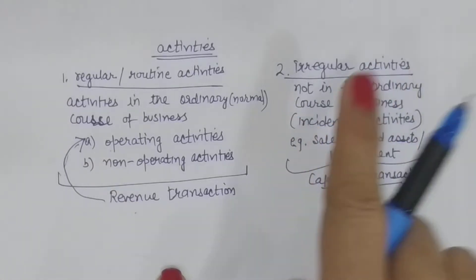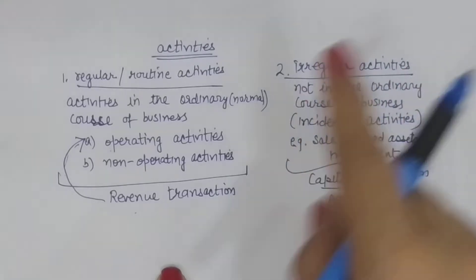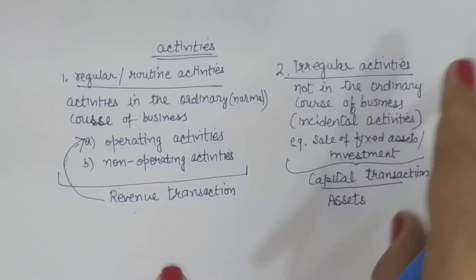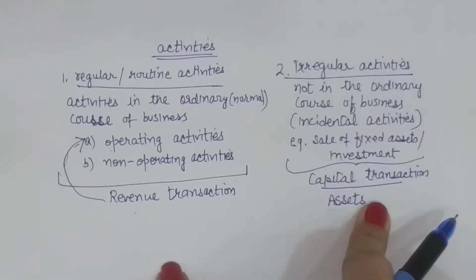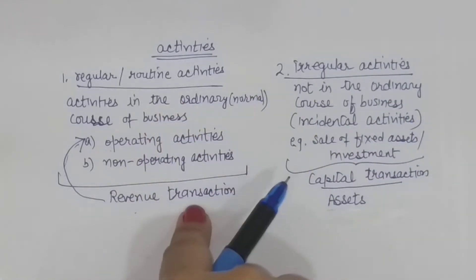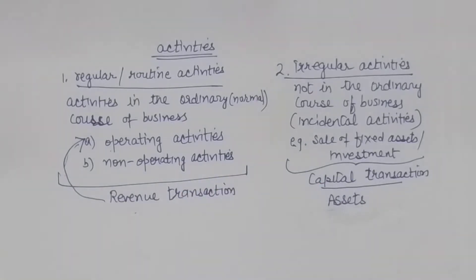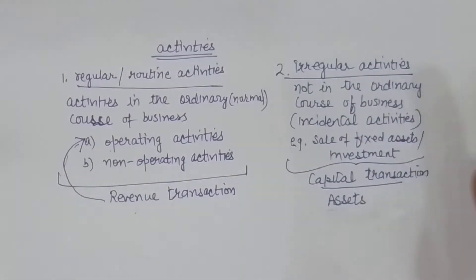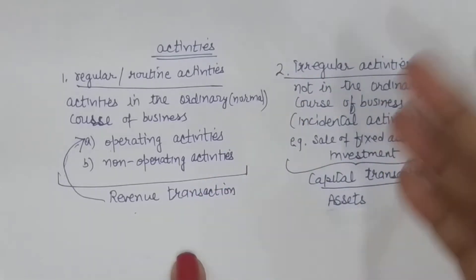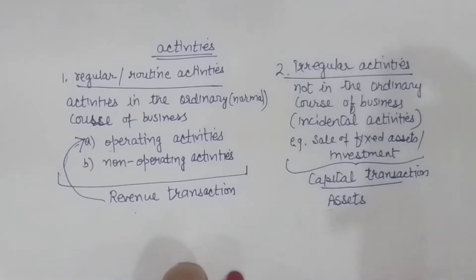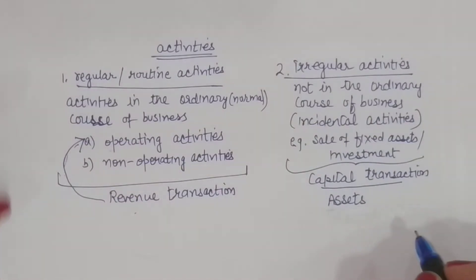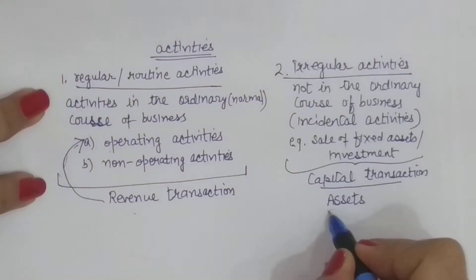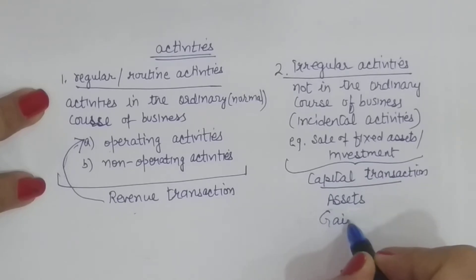Yeh routine mein nahi hoti, yeh non-recurring hoti hain. Non-recurring ka matlab hai jo baar baar nahi hoti. So non-recurring activities par bhi profit or loss ho sakti hai. Or operating or routine activities mein bhi profit or loss hoti hai. Jaise agar aapne ek business ki machine jo ab useless hai, khatam ho gayi, usko becha — uspe bhi profit or loss hoga. To us profit or loss ko jo aapko irregular activities se milta hai, uske liye term use ki jaati hai: gain.